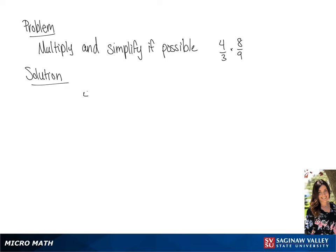Our problem is 4 over 3 times 8 over 9. The first thing we're going to do is multiply the numerators. So 4 times 8, which is equal to 32. Now we're going to multiply the denominators, which is 3 times 9, equal to 27. So we have 32 over 27 as our answer.